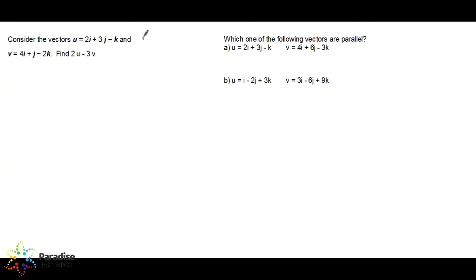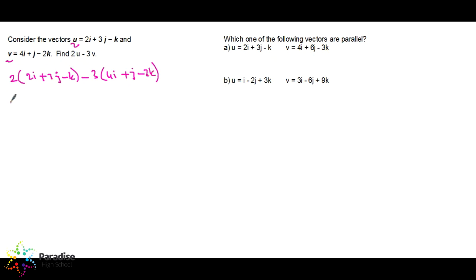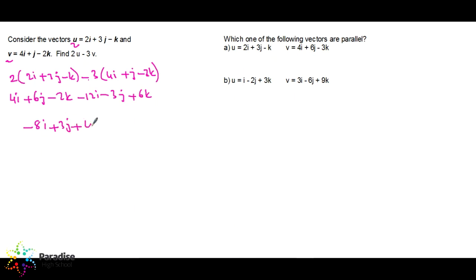Given vectors u and v, find 2u − 3v. So: 2 × (3i + 3j − k) − 3 × (4i + j − 2k). Distributing: 6i + 6j − 2k − 12i − 3j + 6k. Combining: (6−12)i = −6i, (6−3)j = 3j, (−2+6)k = 4k. So 2u − 3v = −6i + 3j + 4k.